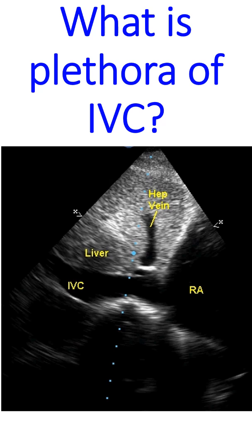IVC plethora is seen in right heart failure and constrictive pericarditis. It indicates high right atrial pressure and an overfilled, less compliant venous system.